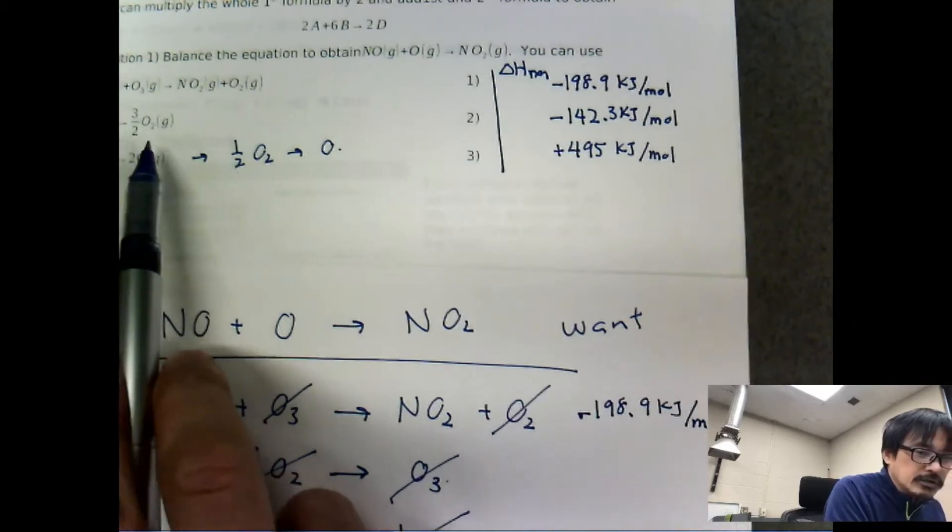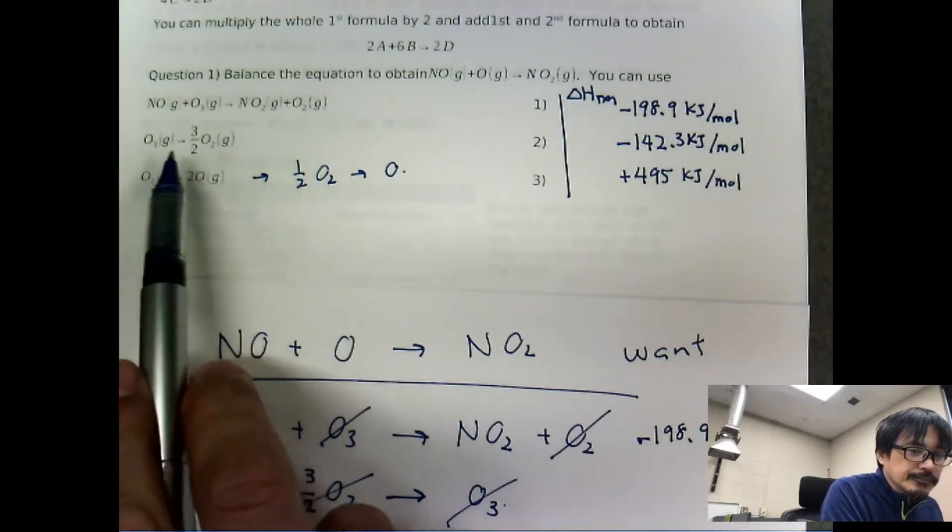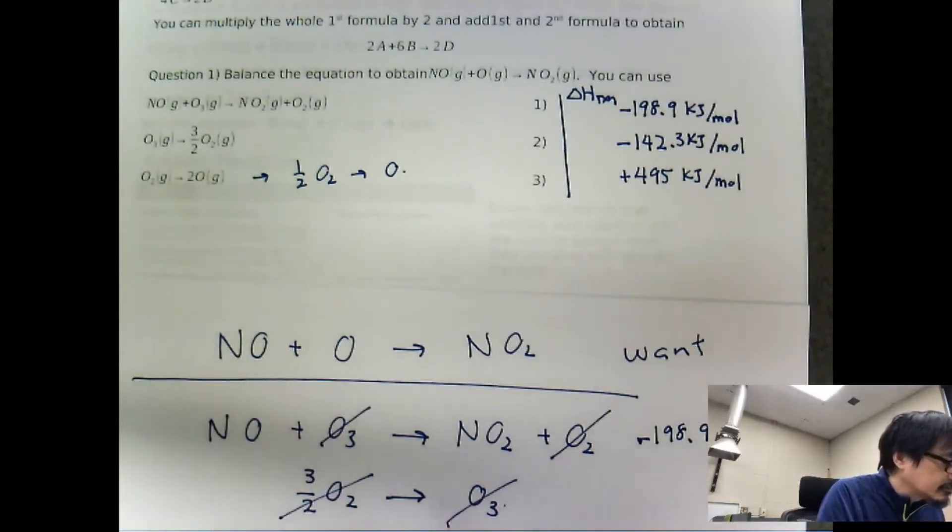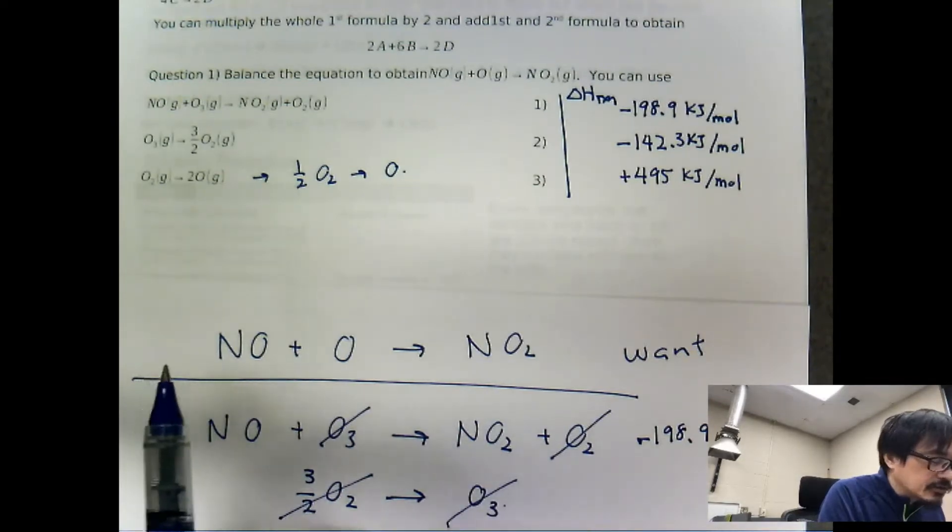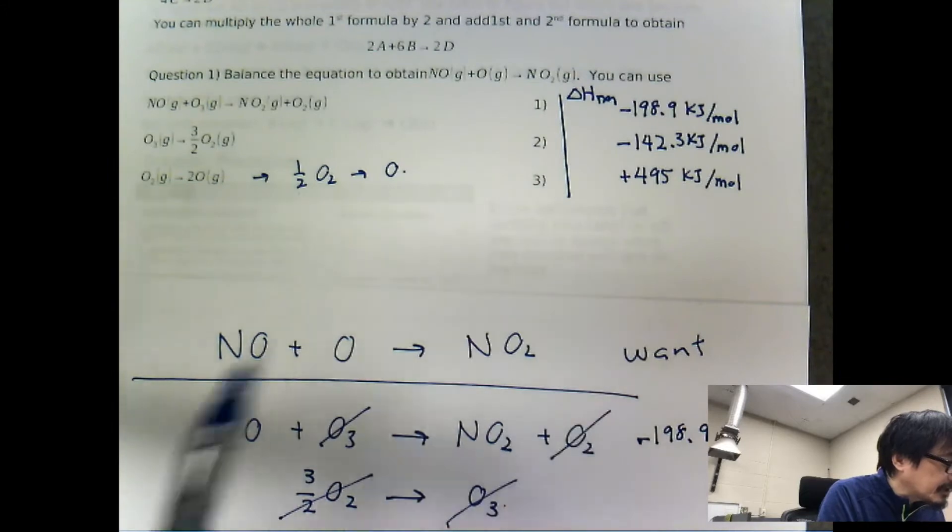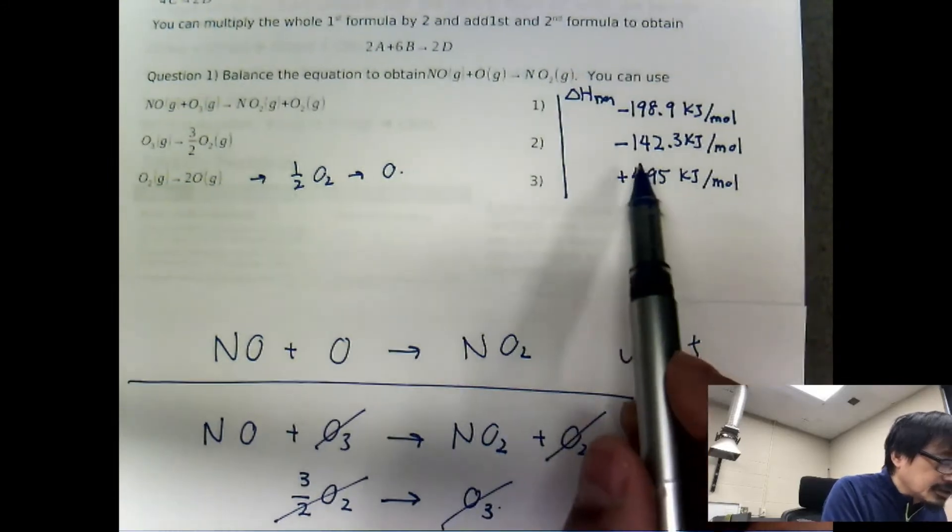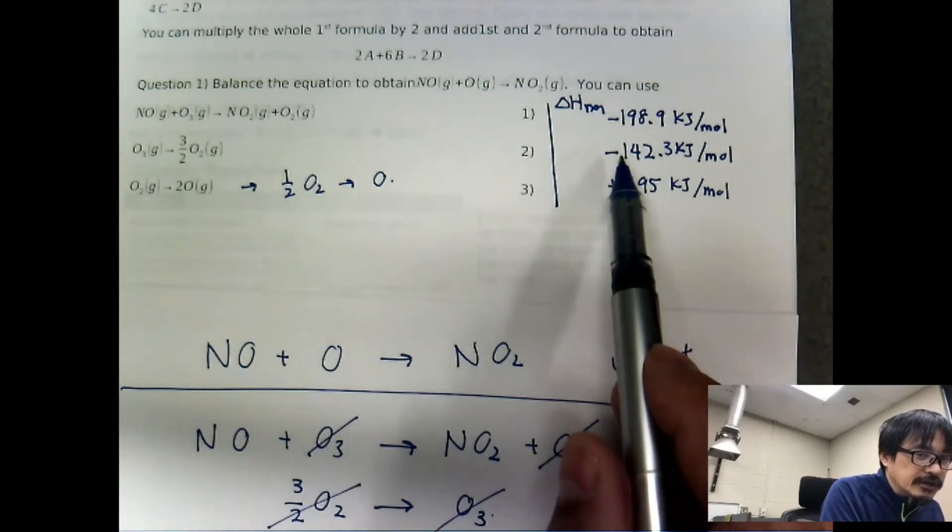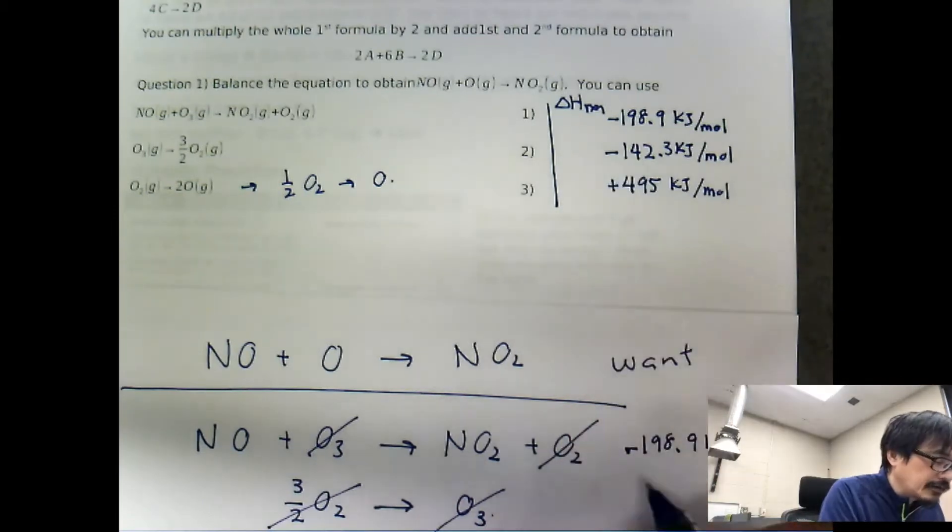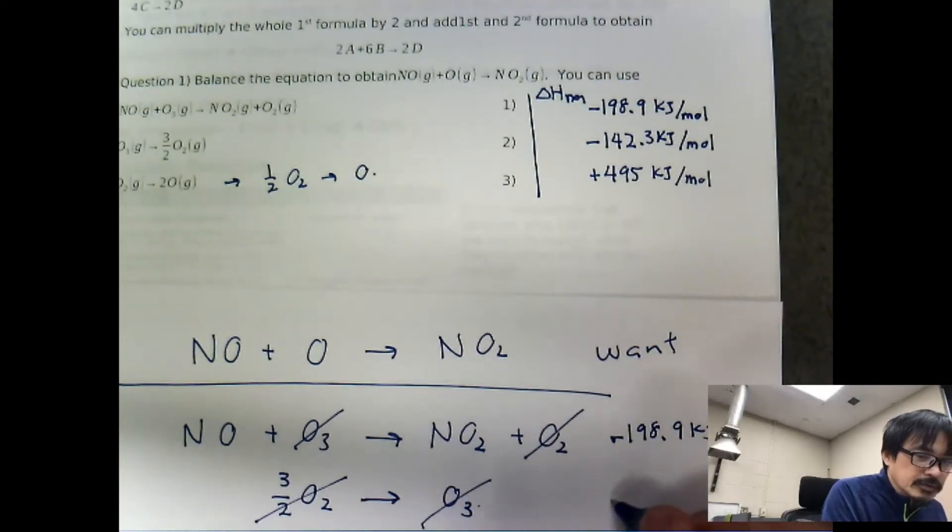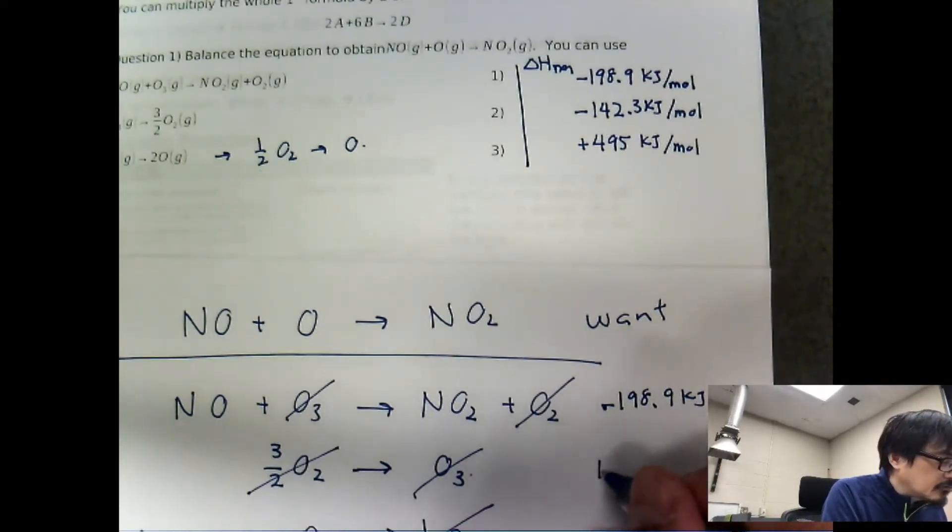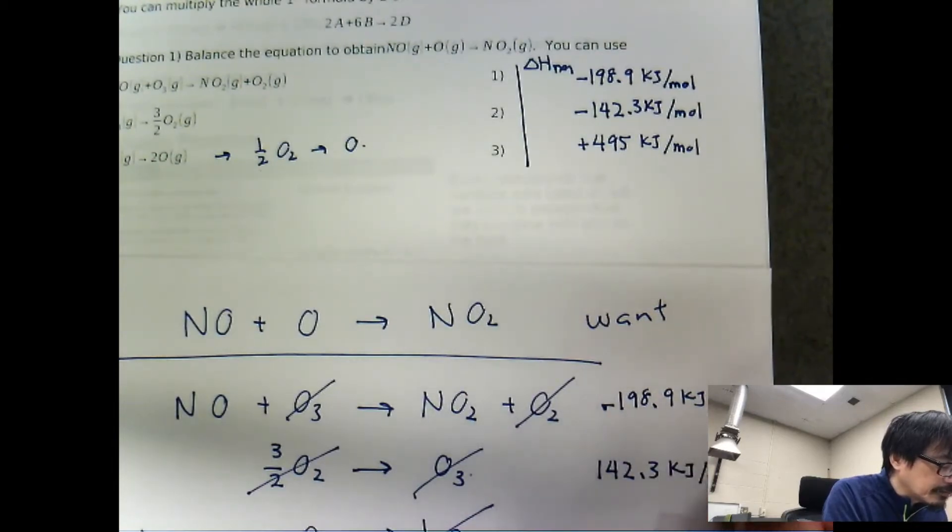what about this reaction right here? For that reaction, we actually flip the reactant to product and product becoming reactant. So what should I do with this negative sign here? It becomes positive, right? So for that reaction, 142.3 kJ per mole.